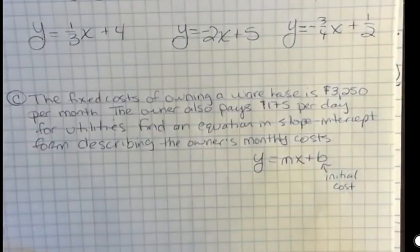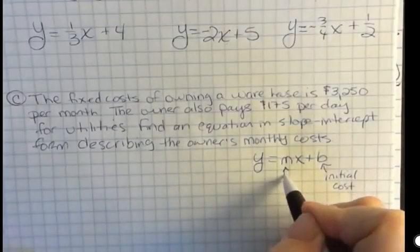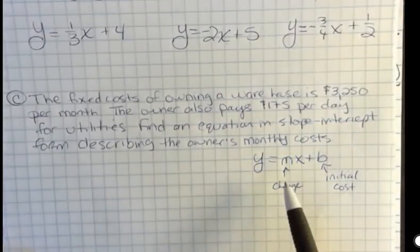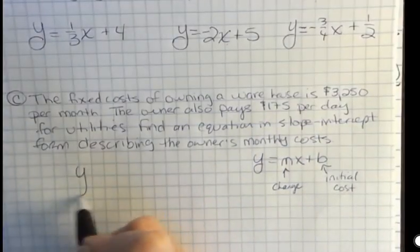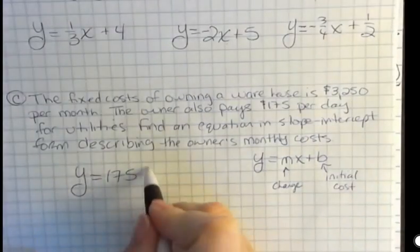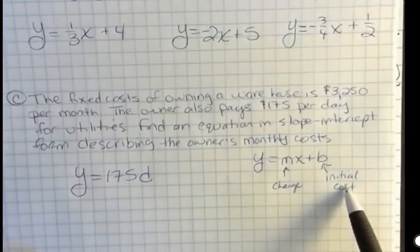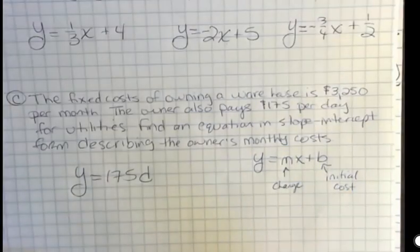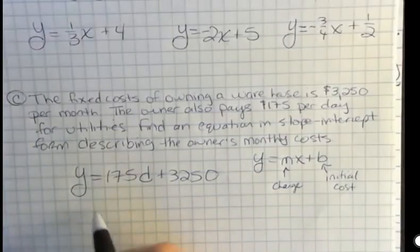Even if we didn't turn the heat on, we still have to pay this cost of owning the warehouse. This is the change that goes on day by day. Slope is a rate of change, and that is $175 per day. So in this case, the slope is 175. We can call days x, and the initial cost is, or the starting cost is $3,250.